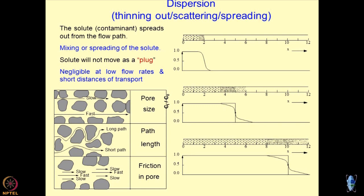What causes dispersion? Ultimately, dispersion is because of the contrast of velocity in different layers of the sample. Imagine a situation where within the pores you have a velocity contrast — this results in the dispersion process. Similarly, long and short path distances within the pores also create dispersion phenomena. If pore sizes are not uniformly distributed, dispersion is going to be prevalent.